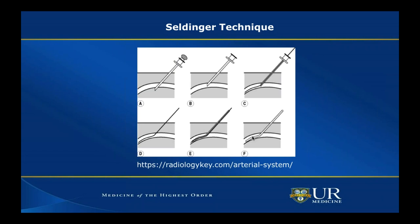The Seldinger technique involves placing a needle into an artery and cannulating it. The original technique involved placing a needle through and through the vessel — a double puncture — until hitting the femoral head. The needle had a stylet; you remove the stylet, pull back until you get blood return, then put your wire in. What we use today is called the modified Seldinger technique, where we enter the vessel only once.